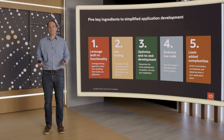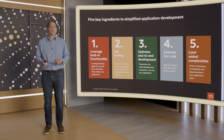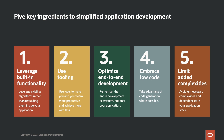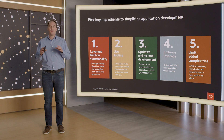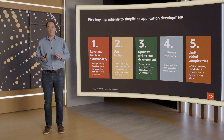To reiterate, there are five key ingredients that can help you make your application development process simpler: leverage built-in functionality, use tooling, optimize the end-to-end development, embrace low code, and limit your added complexities. In the following five sessions, we will dive deep on all of these areas. Thank you so much for attending Oracle Database World, and I hope you have a great day ahead of you. Thank you very much.